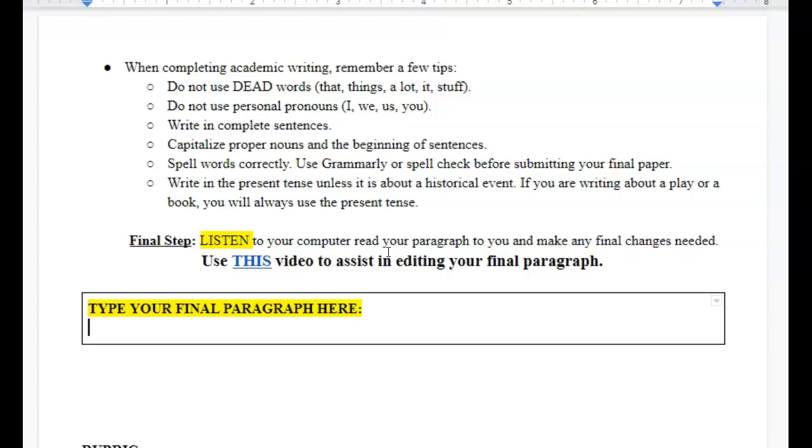You're completing academic writing. There's a few things you need to remember, and that is you cannot use dead words. You learned these last year. Dead words are words like that, things, a lot, it, stuff. I want you to go through your paper right now and look for those words. When you see them, replace them. Take them out.